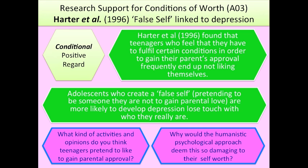That covers all the AO1 and AO2 content. Now we're going to evaluate the humanistic approach — you need 10 marks worth of evaluation, looking at five evaluation points. The first is research support for conditions of worth. There is research support from Harta et al (1996), who found that teenagers who feel they have to fulfil certain conditions in order to gain their parents' approval frequently end up not liking themselves. Adolescents who create a false self — pretending to be someone they are not to gain parental love — are more likely to develop depression and lose touch with who they really are.